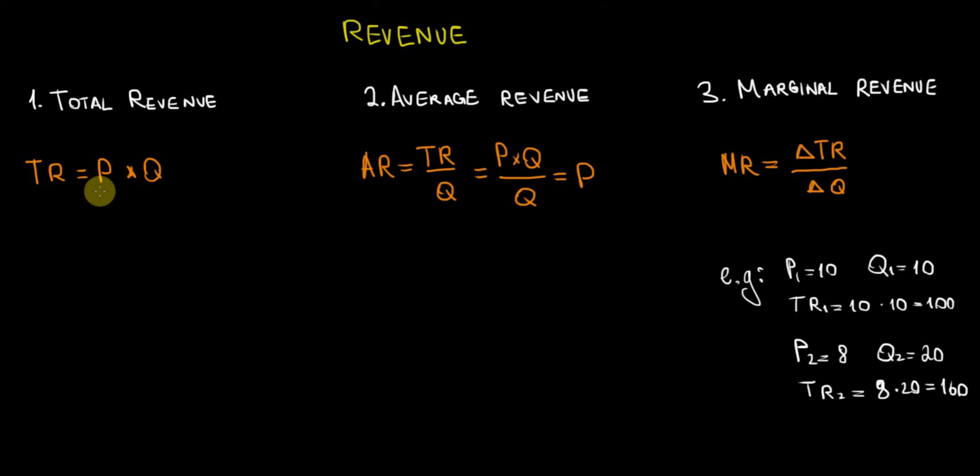Average revenue is how much revenue we get on average per unit of sale. That's the total revenue that we collect divided by the total number of units sold, AR = TR/Q, which is price times quantity over quantity. This simplifies to just the price, so the average revenue equals the price.